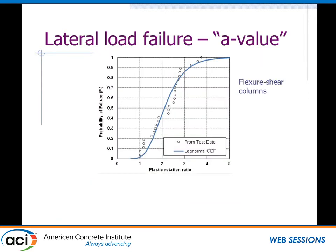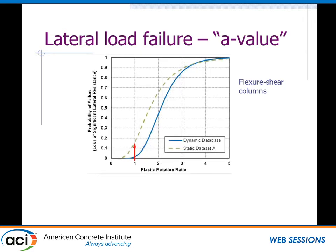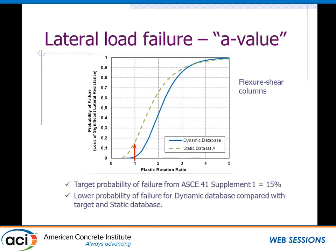Let's compare these by building a fragility curve, adding up the test data when they exceed a particular plastic rotation ratio. Comparing both the dynamic and static sets, at a plastic rotation ratio of one — where the test data matches with the ASCE 41 values — we see a probability of failure of about 15% from the static dataset and much, much lower for the dynamic dataset. That 15% probability of failure is actually the target probability from ASCE 41 Supplement 1, not a coincidence since it used the same dataset. The dynamic dataset shows we are conservative compared to it.